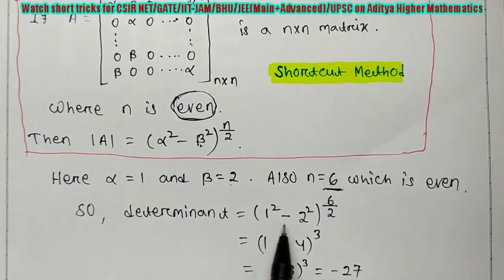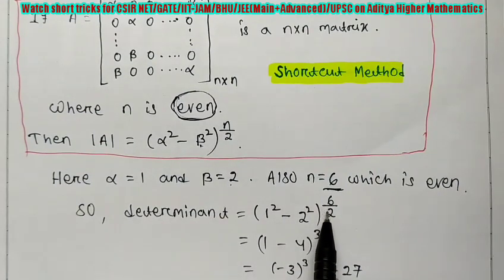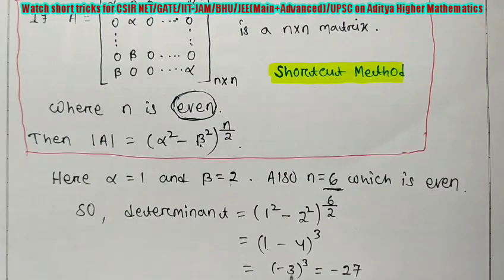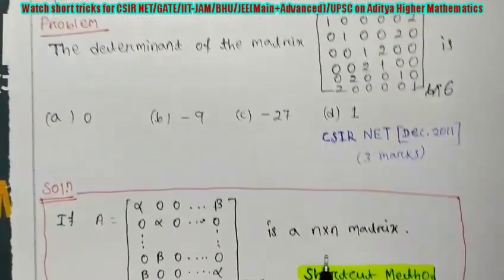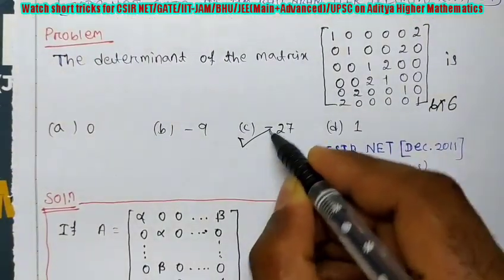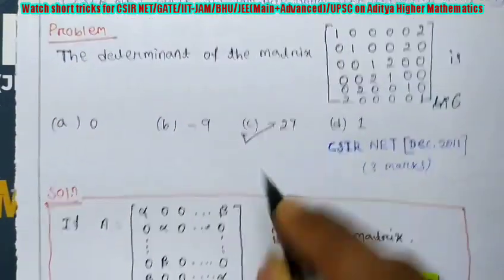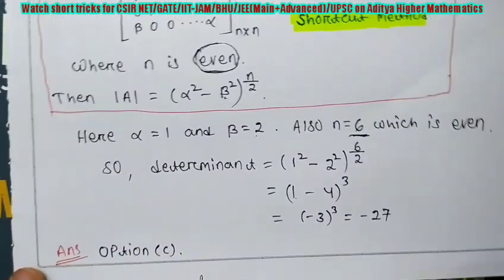So the determinant is (1 squared minus 2 squared) to the power 6 by 2. That is (1 minus 4) to the power 3, which is (minus 3) to the power 3. That is minus 27. You can see in 10 seconds we are getting our answer minus 27. That means option C is the correct answer.